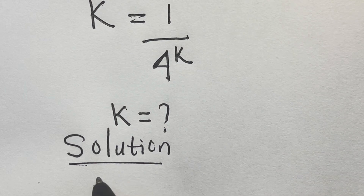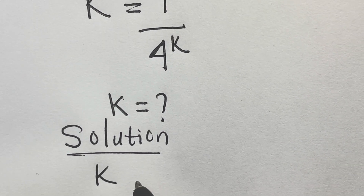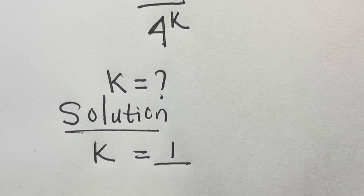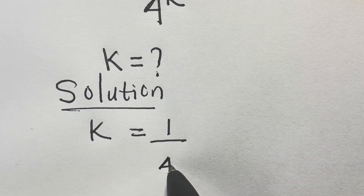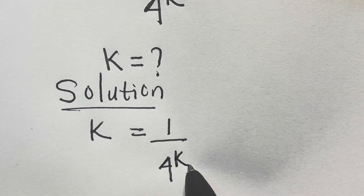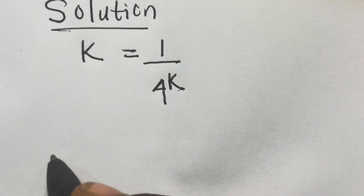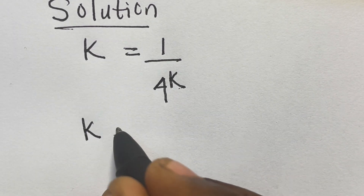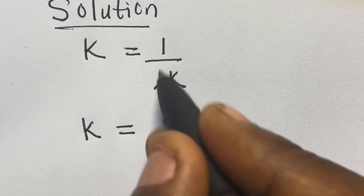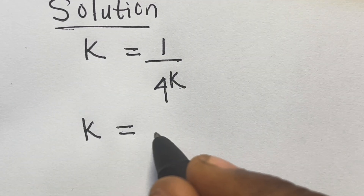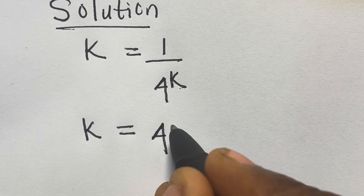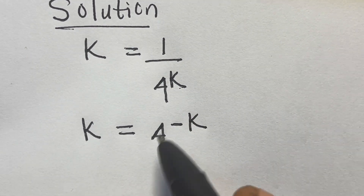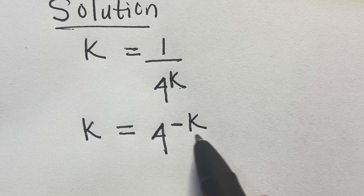We have k equals 1 divided by 4 raised to the power k. From here, we have k equals — this can be transformed into the negative index of 4 raised to the power minus k.